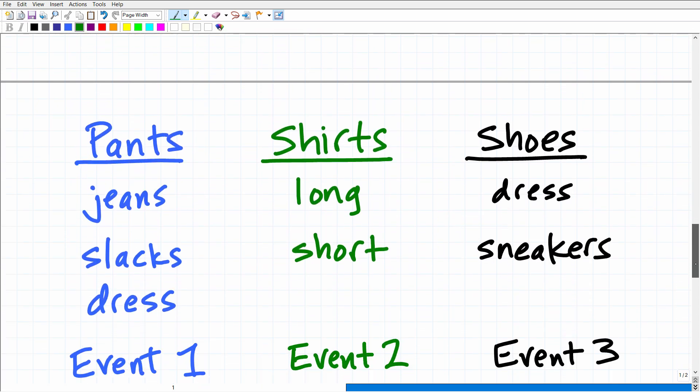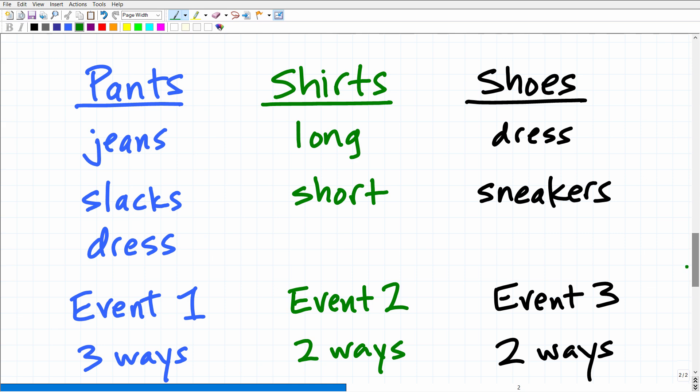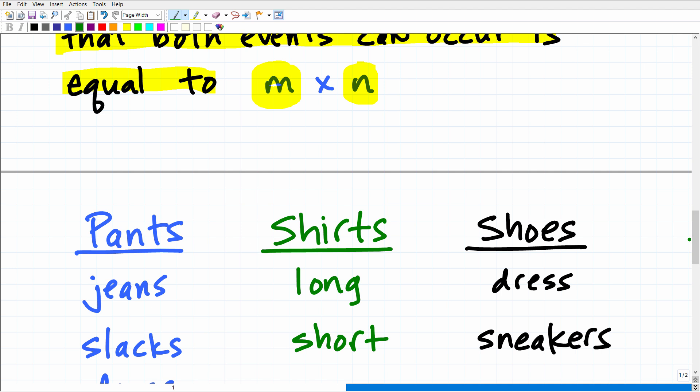It says, if one event can occur in M ways and another event can occur in N ways, then the number of ways that both events can occur is equal to M times N. So oftentimes when you read a kind of formal mathematical principle, it doesn't really make a lot of sense until you look at an example. And this problem here that we're trying to solve is a perfect example to understand the fundamental counting principle.